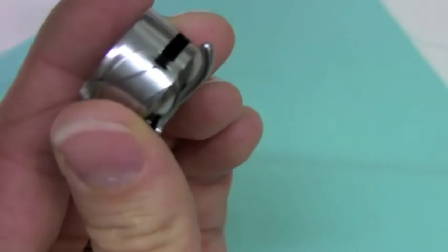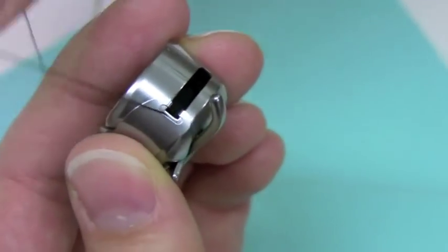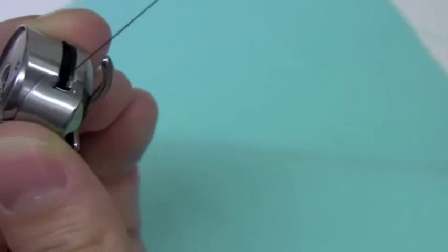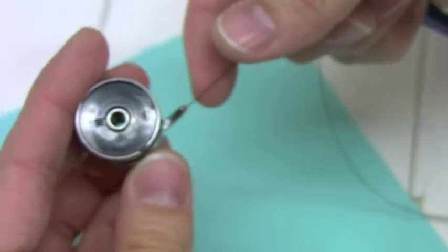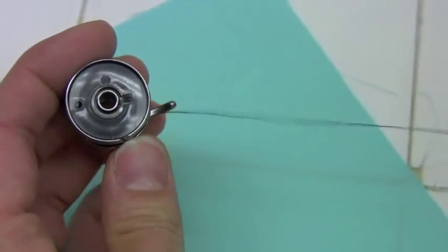You'll hear it click right through the delivery eye, and then you just make sure you pull, and you have about four inches of string. When you look at the bobbin and pull, you'll notice that your bobbin is turning clockwise.